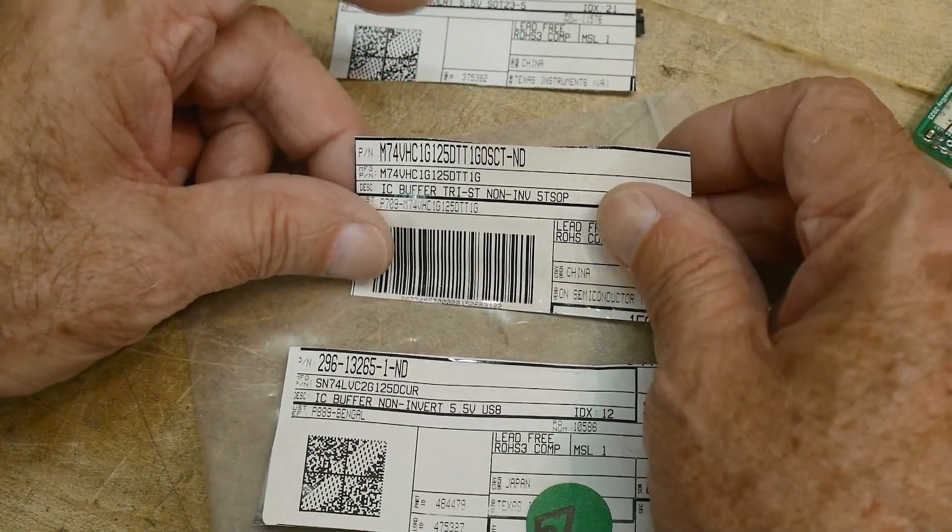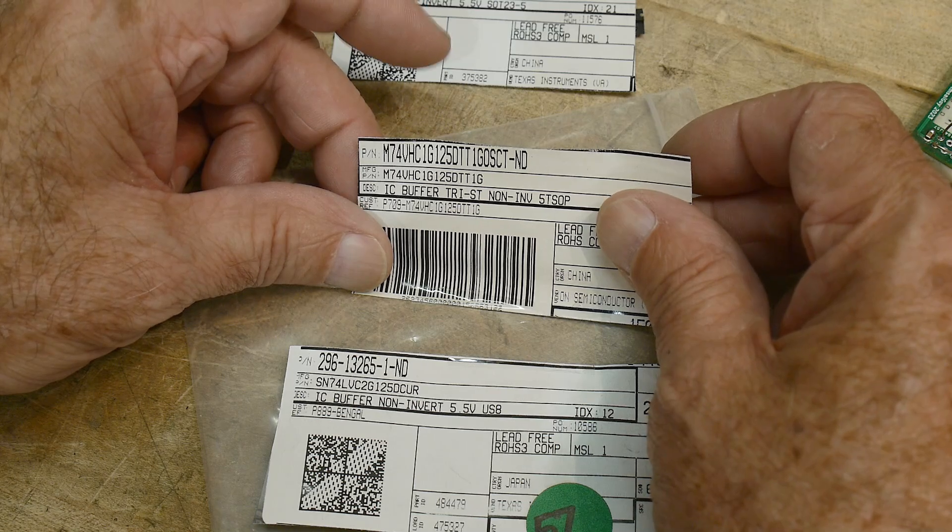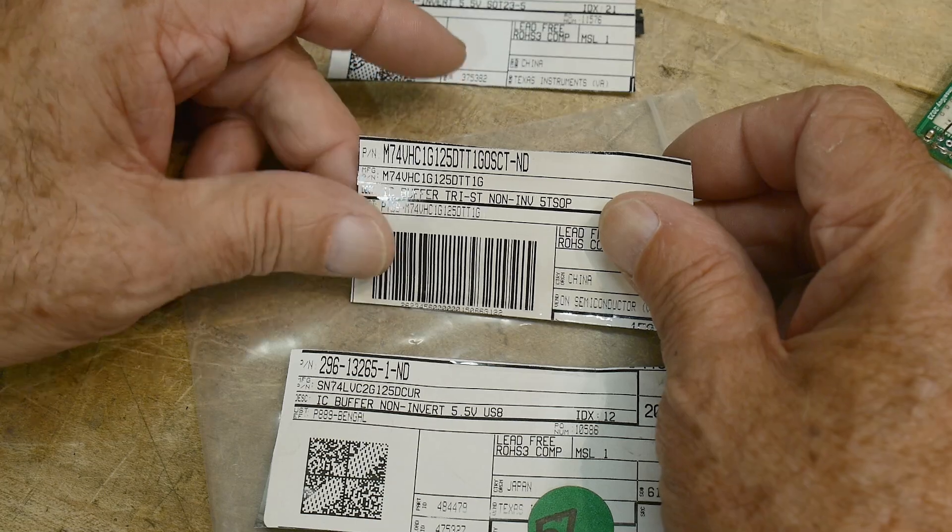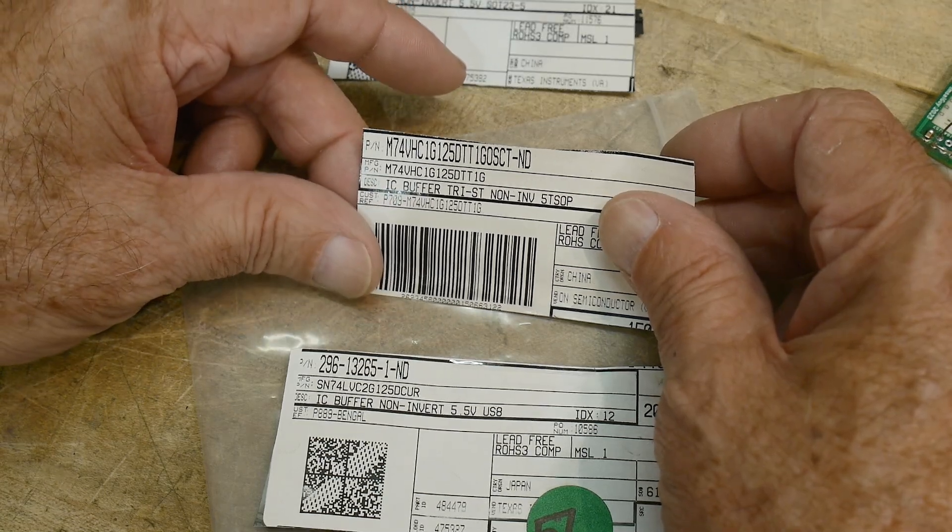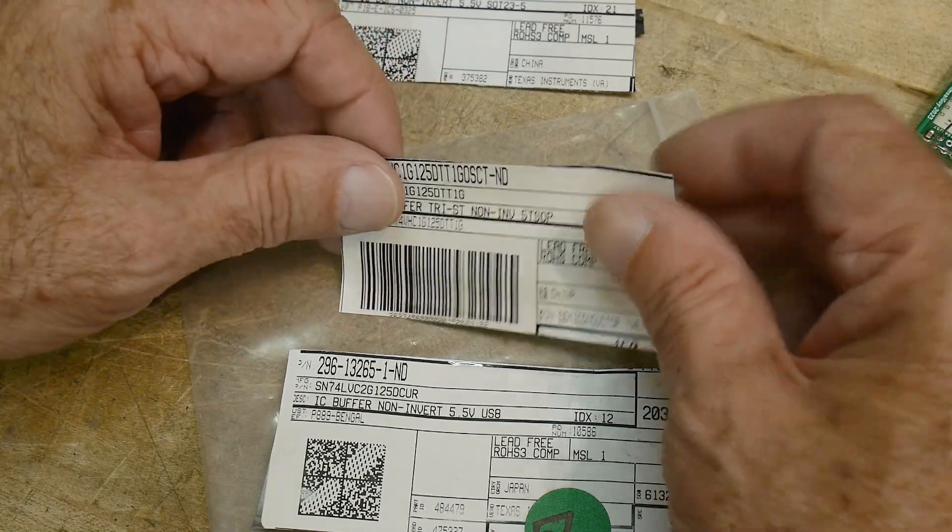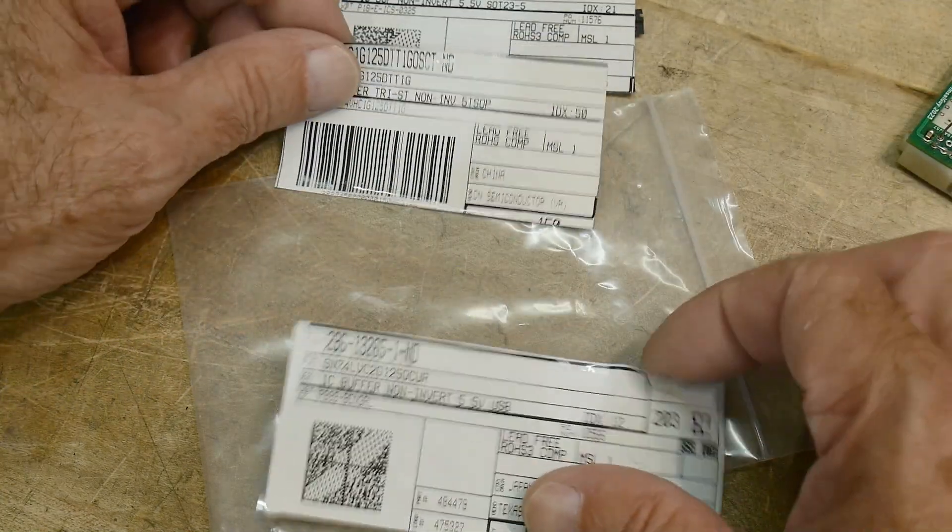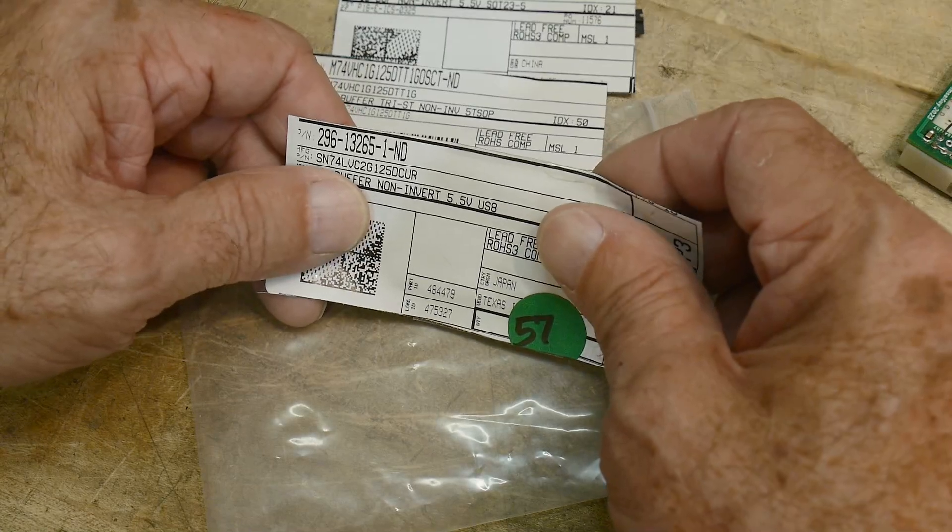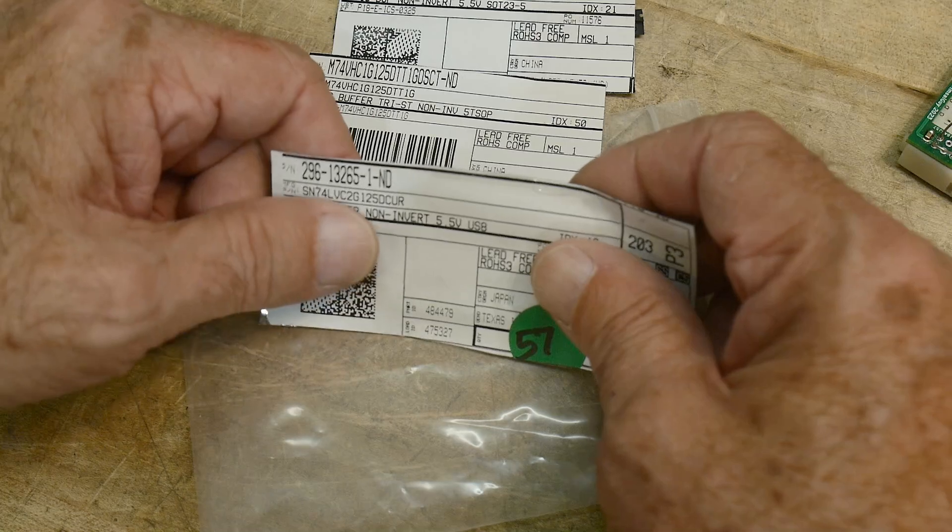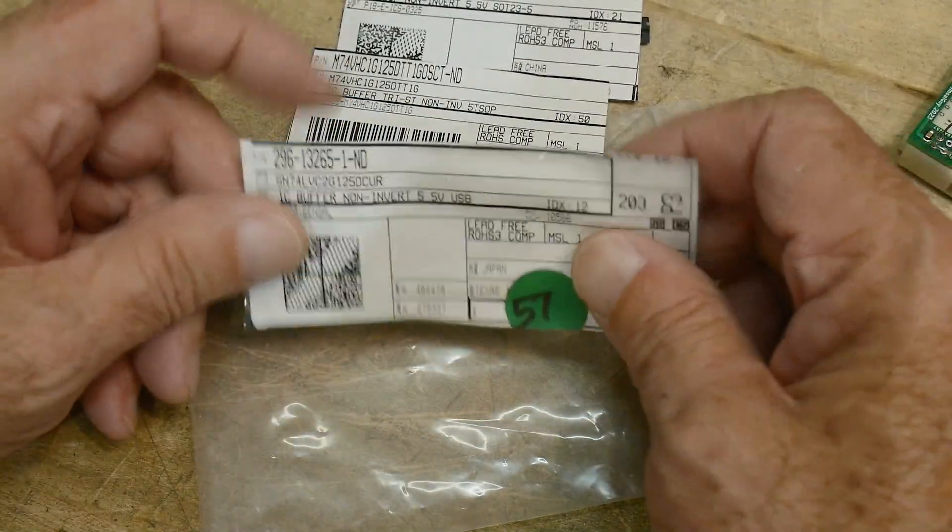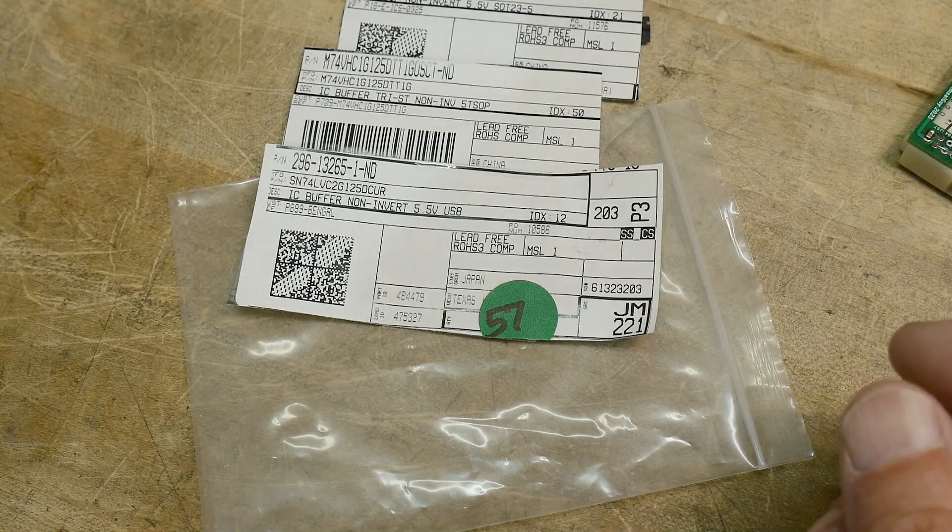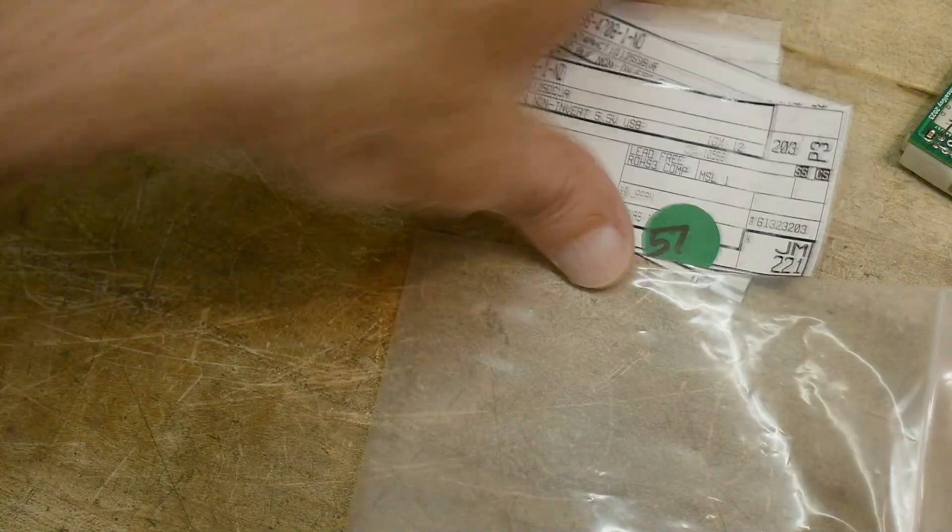He also has a VHC 1G. These are all 1Gs. That's a different one. I'm not sure what VH, I don't think I've used that one before. And then this one is an LVC, low voltage CMOS. We've seen those before. This one's two gates, so these are one gates, this is a two gate. All different flavors but they're all basically 74 125s. Let's take a look at that on a datasheet.